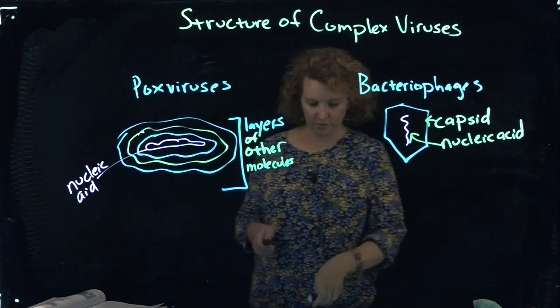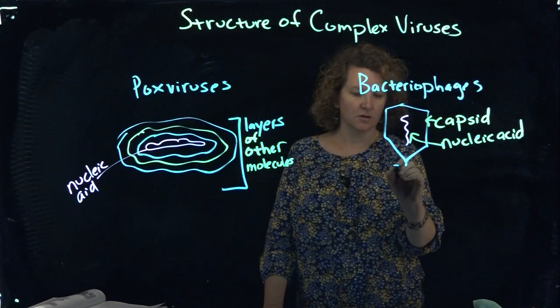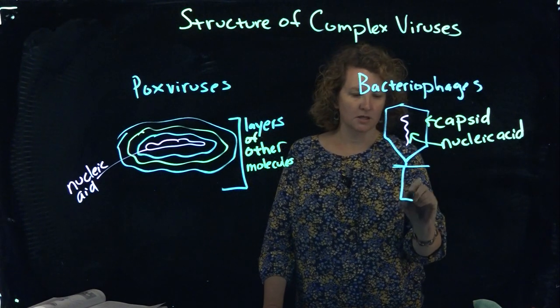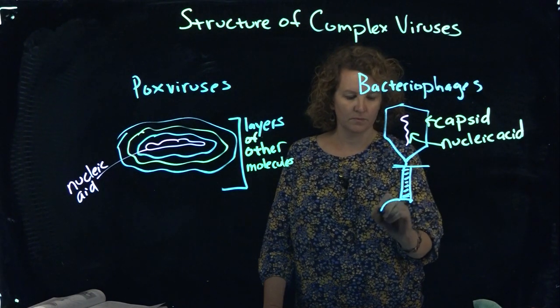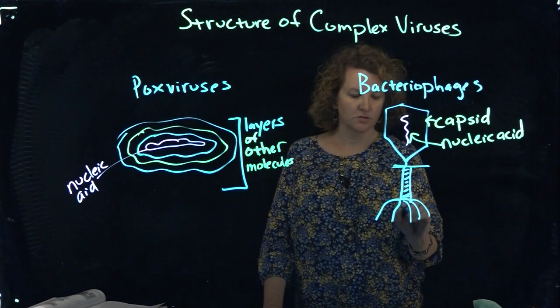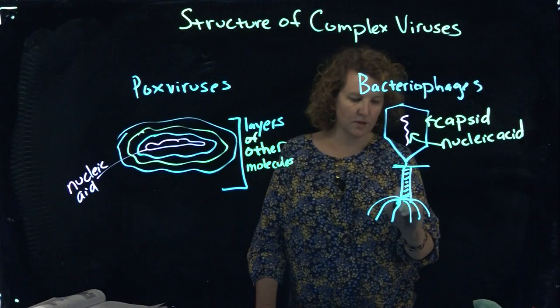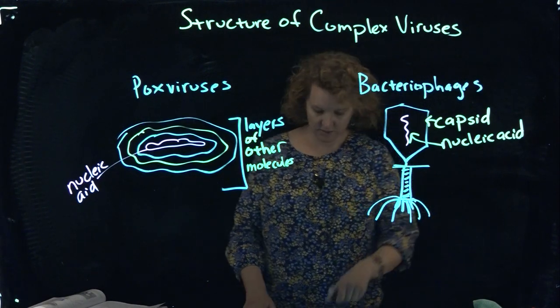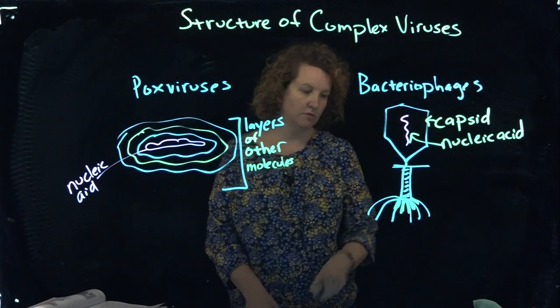But then it's got these additional protein structures around the base of it. So it has what's called a collar and then a sheath. I'll label this here in just a second. These strange, kind of spacey looking tail fibers here, as well as some pins. I'm going to actually use different color here for a little bit of contrast. These tail pins at the base. So let me label those.